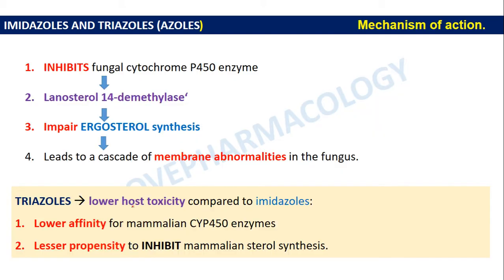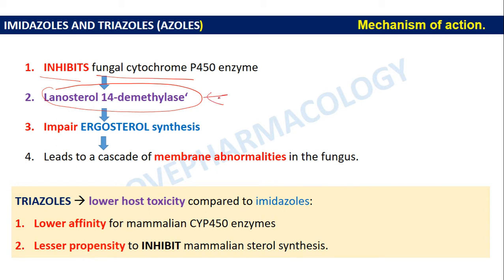Regarding the mechanism of action of azoles, they inhibit the fungal cytochrome P450 enzyme — specifically, they inhibit lanosterol 14-α-demethylase, which is required for ergosterol synthesis. By inhibiting lanosterol 14-α-demethylase, ergosterol synthesis is impaired.